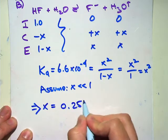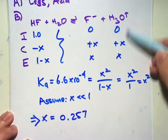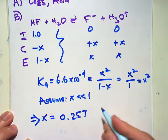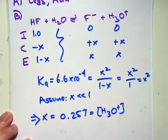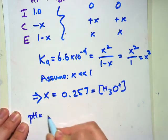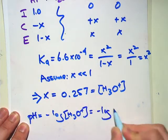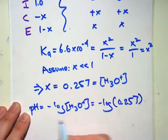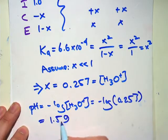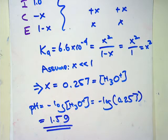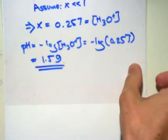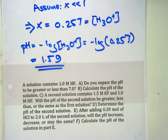Part C: a second solution contains KF and HF. Do you expect the pH of the second solution to be greater or less than the first? It's going to be greater. Why? Because I just added KF. KF is a conjugate base. If I add a conjugate base, it's going to increase the pH. Another way to think of it: F⁻ is the common ion — it's going to cause a shift to the left, so [H₃O⁺] concentration will go down and pH will go up. We're expecting pH to go up because we added a base.